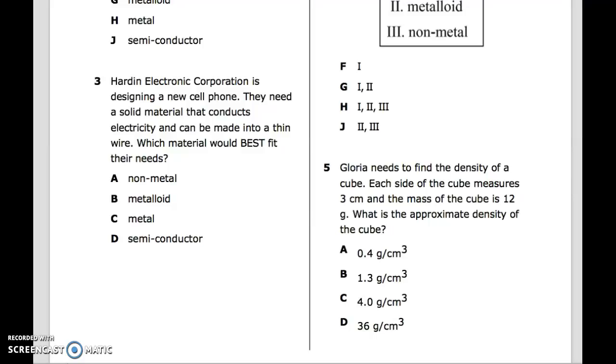Question 3: Hardware Harding Electronic Corporation is designing a new cell phone. They need a solid material that conducts electricity and can be made into a thin wire. Which material would best fit their needs? A. Nonmetal, B. Metalloid, C. Metal, D. Semiconductor.